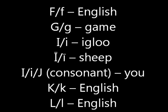You would pronounce F as in English. You would pronounce the letter G as G, like game. You would pronounce the letter I as I, like igloo. You would pronounce a long I as E, like sheep.